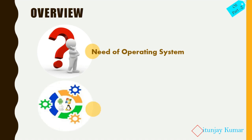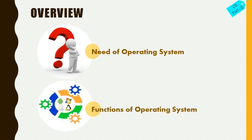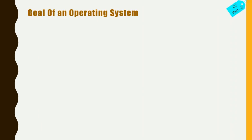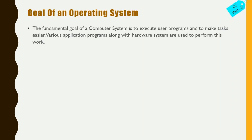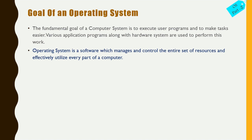We will also see the functions of the operating system. Before starting these two topics, let's discuss the goal of the operating system. The fundamental goal of a computer system is to execute user programs and to make tasks easier. Various application programs along with hardware systems are used to perform this work.